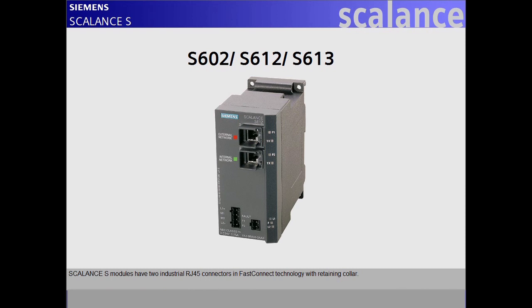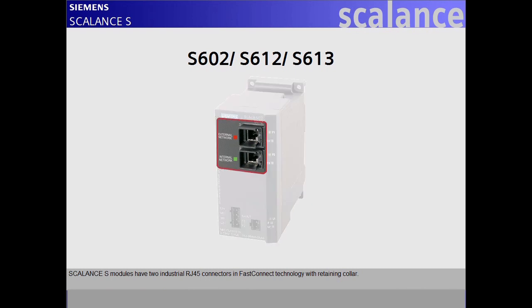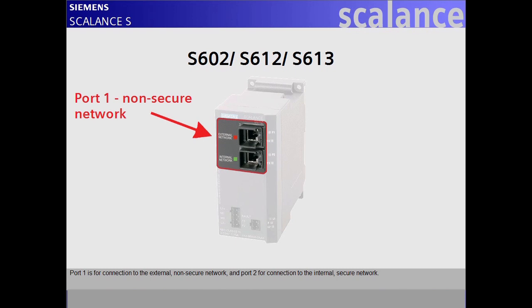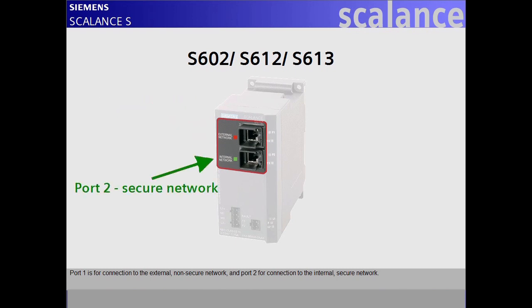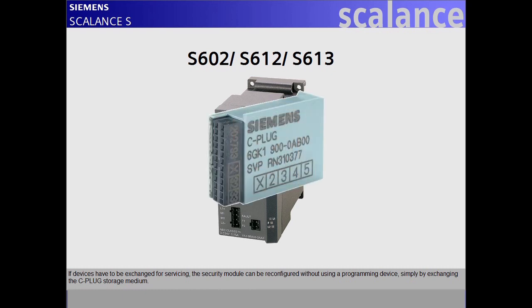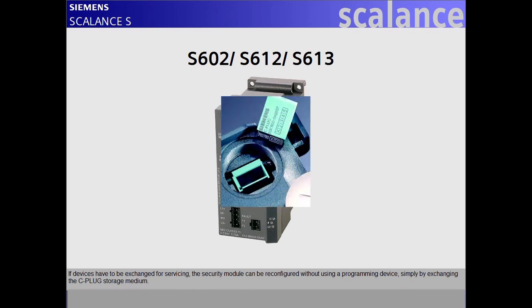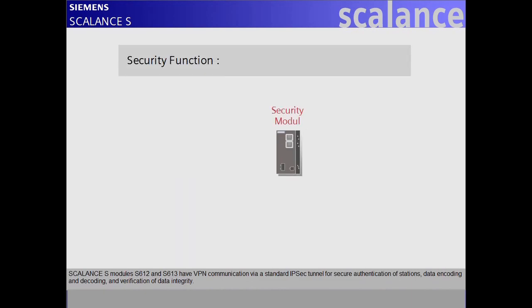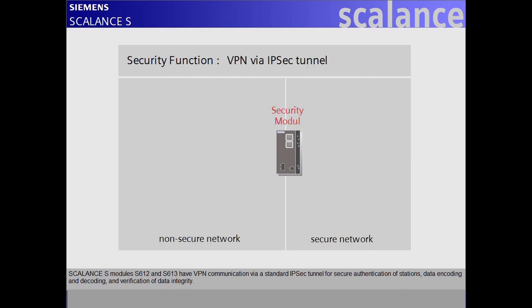Scalance S modules have two industrial RJ45 connectors in FastConnect technology with retaining collar. Port 1 is for connection to the external non-secure network, and port 2 for connection to the internal secure network. If devices have to be exchanged for servicing, the security module can be reconfigured without using a programming device, simply by exchanging the C-plug storage medium.